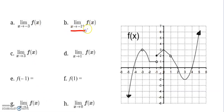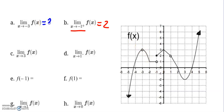Let's start with this one. This is saying: what y-value are we approaching as x approaches negative 1 from the right? That's what that little positive sign means. As our x-values approach negative 1 from the right, our y-values are approaching 2. This one here is saying as x approaches negative 3 — since there's no plus or minus, we look from the left and from the right. From the left we're approaching 3, from the right we're approaching 3, so overall we can say we're approaching 3.